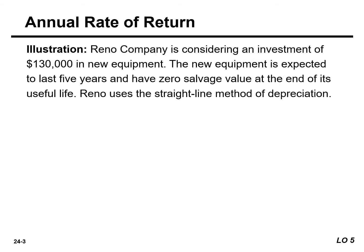Assume that Reno Company is considering an investment of $130,000 in new equipment. The new equipment is expected to last five years and have a zero salvage value at the end of its life. Reno uses the straight-line method of depreciation.